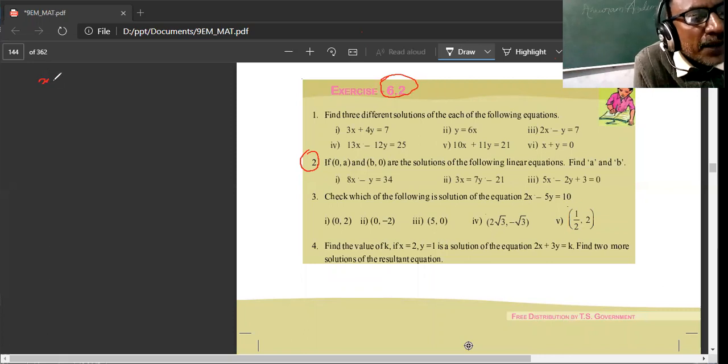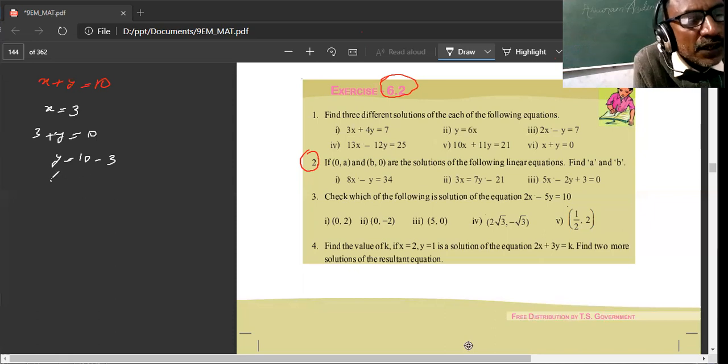Some x plus y is equal to 10. Now, if my x value is equal to 3, I have 3 plus y is equal to 10. Therefore, y is equal to 10 minus 3. Then y is equal to 7.